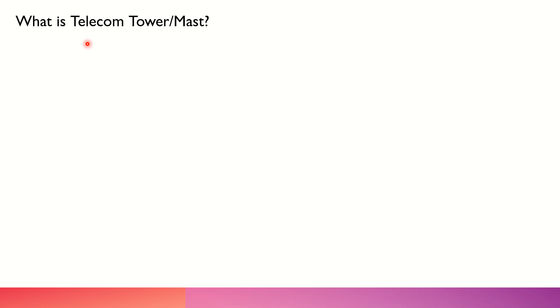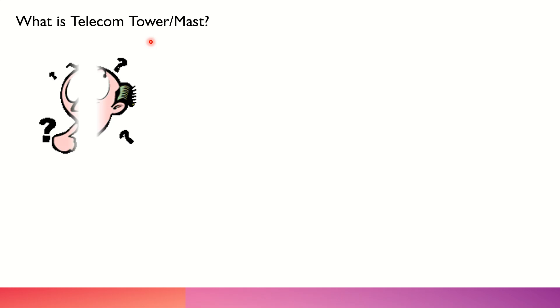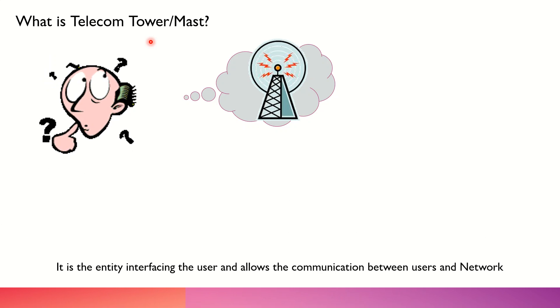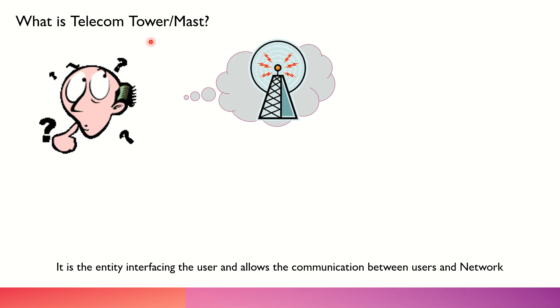When we look into the first subnetwork, which is a radio access network, it is having a telecom mast or we call it a telecom tower. Any mast which is having certain antennas is basically allowing the communication happening between the user equipment and the network itself.